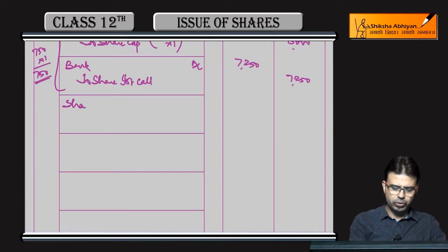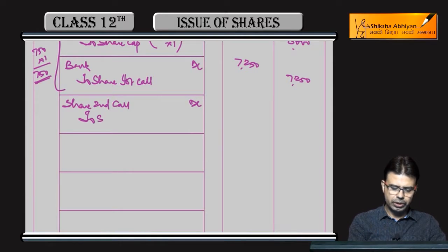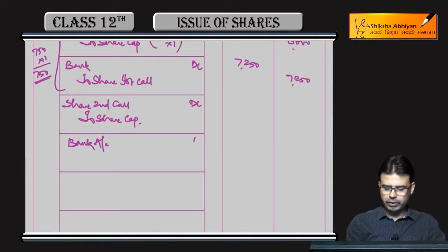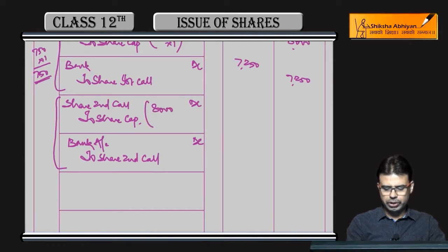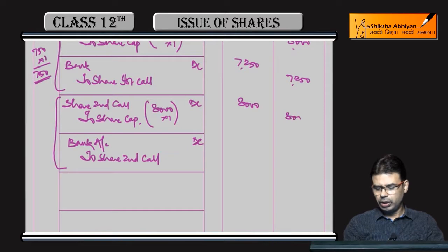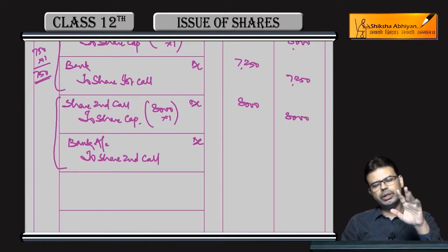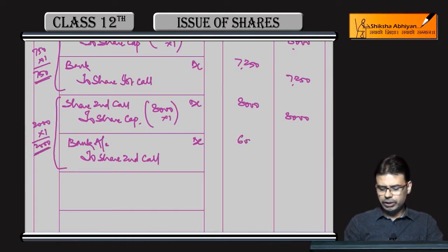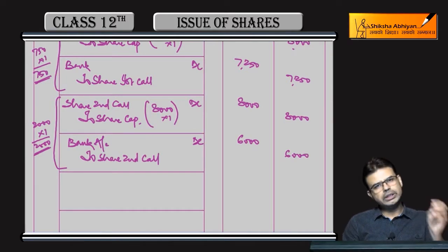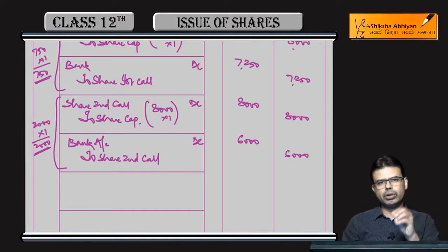Isi tarah se second call due karo aur mangwao bacho. Share Second Call debit — 2 Share Capital. Bank Account debit — 2 Share Second Call. 8,000 shares × 1 rupee per share — second call mangwai. Aur ab 250 plus 500 plus 1,250 — 2,000 shares par receive nahi hua. Baaki 6,000 par receive. Waise bhi likha hua tha: only on 6,000 shares full amount receive hua hai — second call tak sirf 6,000 shares hi mile hain.